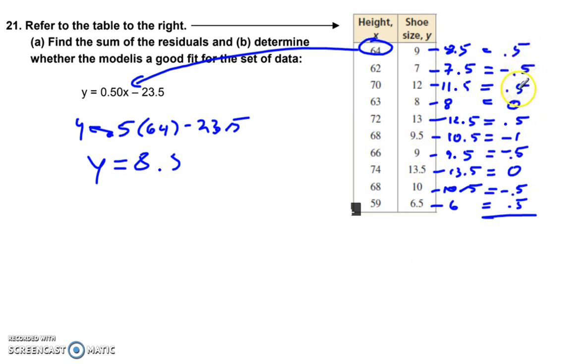Here. These two cancel out. 0.5, 0.5, minus 1 cancel out. 0.5 and 0.5 cancel out. So I'm left with negative 0.5. And if it's within 1, then yes, that is a good model. Yes, they're evenly distributed across the x-axis, the residuals here. Alright.